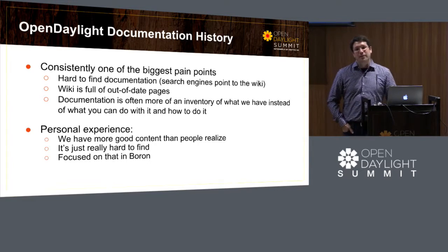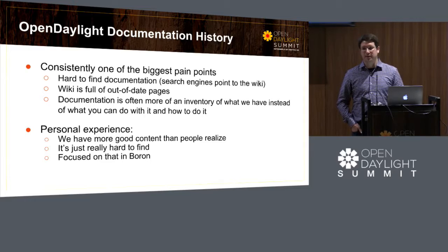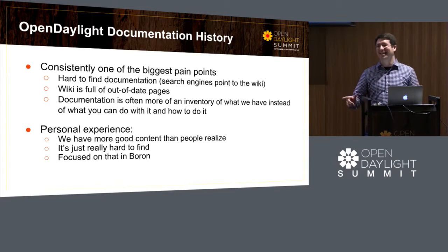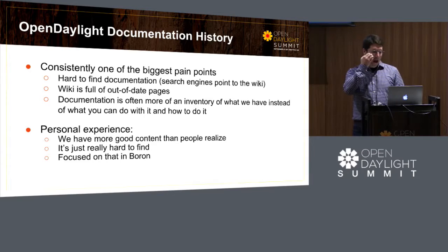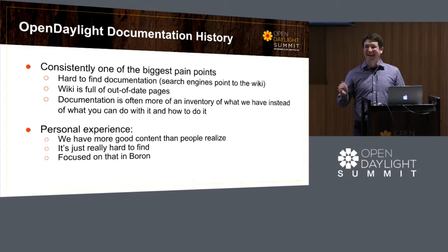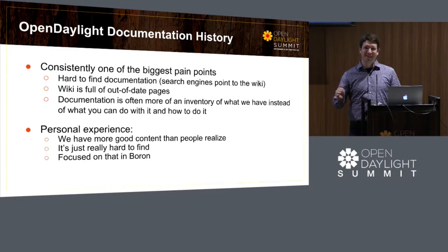Documentation has consistently been one of the two biggest pain points people complain about, the first one being upgrades. Upgrades are hard, but documentation is also hard — just easier than upgrades, so we did documentation. It was really hard to find because search engines point to the wiki instead of the PDFs. The wiki was full of horribly outdated information — basically guaranteed that if you browsed to somewhere on the wiki, it was wrong, and in some cases so wrong you couldn't even discover it was wrong.